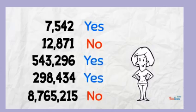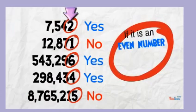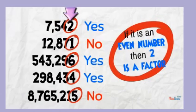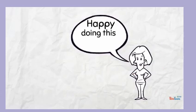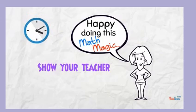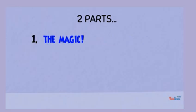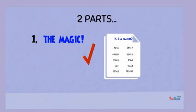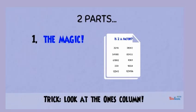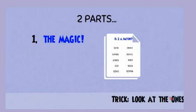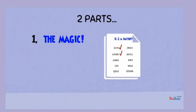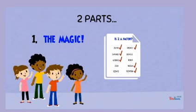If not, remember: we just have to check the last digit — the ones column. If it's an even number, then 2 is a factor. If you are happy doing this math magic trick, it's time to show your teacher on paper. There are two parts to the work. Firstly, the magic part: you will be given a worksheet. Put a checkmark beside each number that you think is divisible by 2 without a remainder, using the trick of glancing at the ones column.